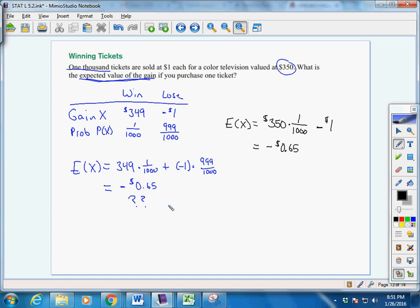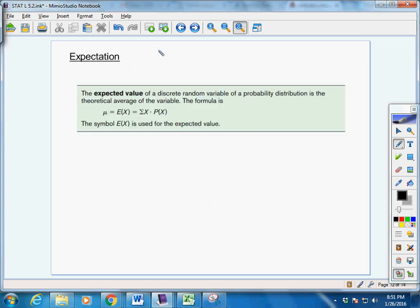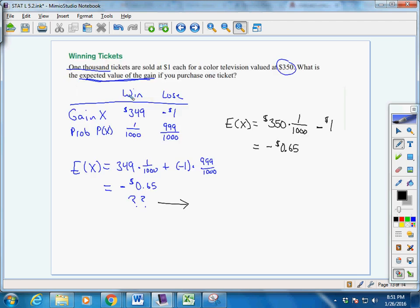So our expected value is negative 65 cents. Confused what that means? Well, remember, expected value is the theoretical average.